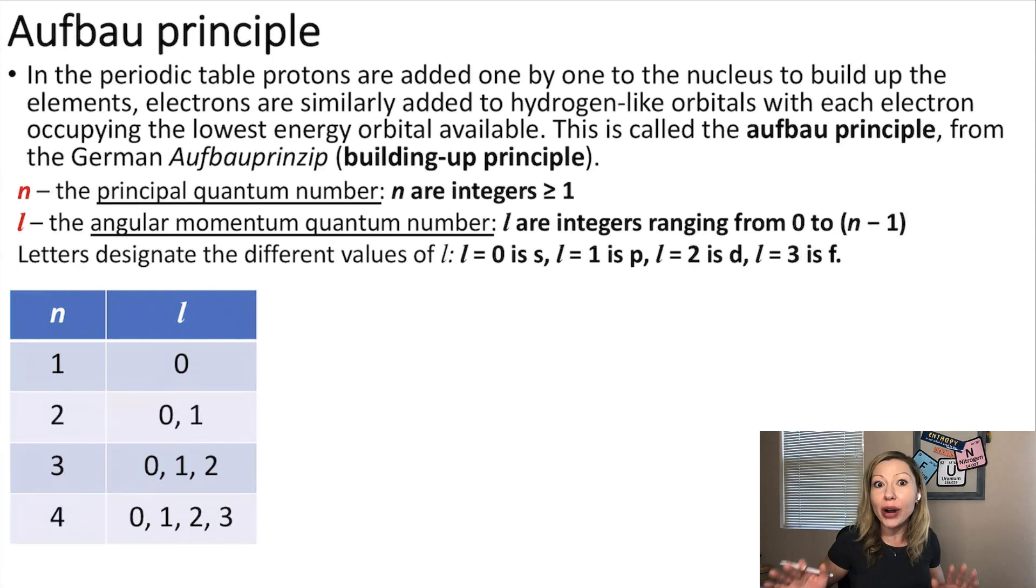We already know that protons are added one by one to the nucleus to build up each element. Electrons are added similarly to hydrogen-like orbitals, with each electron occupying the lowest energy orbital available. This is called the Aufbau principle. How do you know which one is the lowest energy orbital? Well, we have to talk about some quantum numbers.